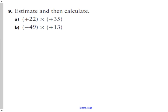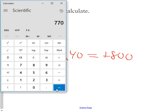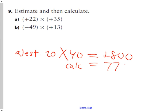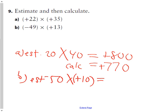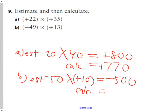Question nine says estimate, then calculate. For estimation, I'm going to round to the greatest place value. For 22, I'm going to make it just 20 because it's going to round down, and 35 is going to go up to 40. So my estimation will be positive 800. Now to calculate, you may use a calculator, which I recommend highly on these ones. 22 times 35, the calculation is 770, positive 770. For B, I'm going to estimate by using negative 50 multiplied by positive 10, which will be an estimation of negative 500. My calculation: negative 49 times positive 13 equals negative 637.